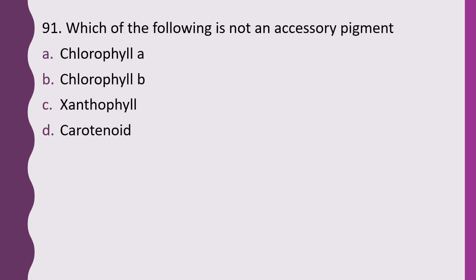Question 91. Which of the following is not an accessory pigment? Chlorophyll A, chlorophyll B, xanthophyll, or carotenoid. The correct answer is option A — chlorophyll A is not an accessory pigment.